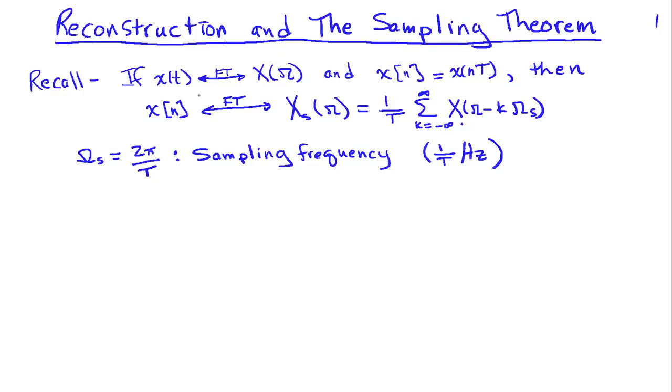Recall that in the previous video we had shown that if I have a continuous time signal x(t), and I sample it to produce a discrete time signal x[n], then I can associate a Fourier transform with the discrete time signal x[n], and the Fourier transform of the discrete time, or the sampled signal now,